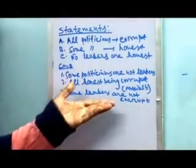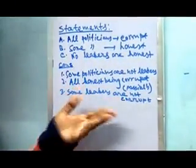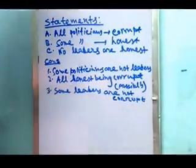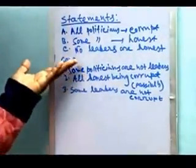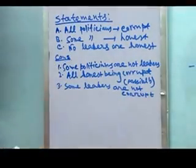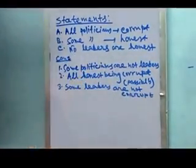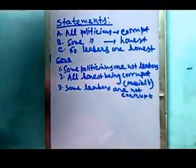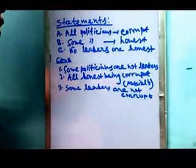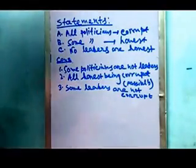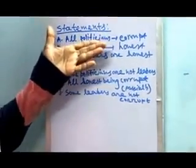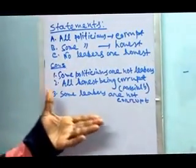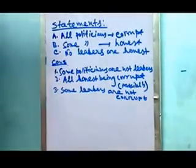Good evening all. Welcome to this new video session — it's all about statement and conclusion with Venn diagrams. Three statements and three conclusions have been given. Based on the three statements, you have to find if each conclusion is correct or not. As I told in my previous video, we need to draw two types of Venn diagrams: a basic diagram drawn from the statements, and a modified diagram drawn from the conclusions.